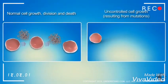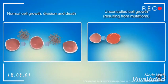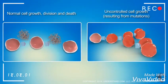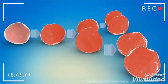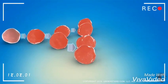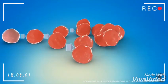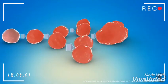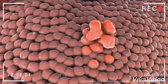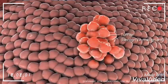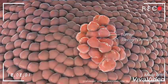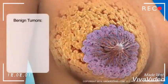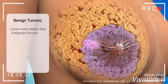Cells with certain mutations behave abnormally — rather than dying off when they should, they keep multiplying. The excessive growth can form masses known as tumors, which can either be benign or malignant. Benign tumors generally grow slower than malignant tumors.